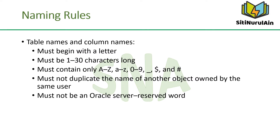You name database tables and columns according to the standard rules for naming any Oracle database object. Table names and column names must begin with a letter and be 1 to 30 characters long. Names must contain only the characters A–Z, a–z, 0–9, underscore, dollar, and number sign — these are legal characters, but their use is discouraged. Names must not duplicate the name of another object owned by the same Oracle server user, and names must not be an Oracle server reserved word.